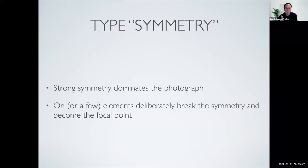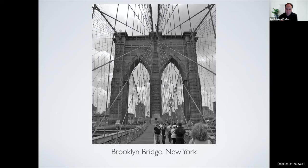The next compositional technique is symmetry, where a strong symmetry dominates the photograph. The other piece is that you also want to concentrate on where you can actually break the symmetry — deliberately breaking it can really help. Here's an example of the Brooklyn Bridge: when I was walking across I shot this image that is symmetrical, with the left half and right half being roughly the same. But we also have all of the people active on the right side of the pedestrian walkway versus the left side. That asymmetry gives you something to focus on and look at, inviting you into the image.